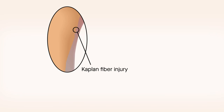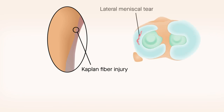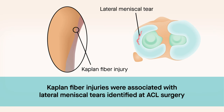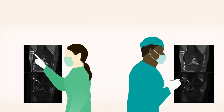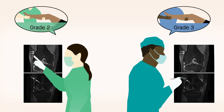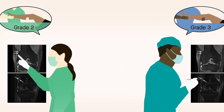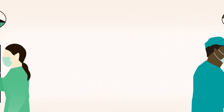However, there was an association between Kaplan fiber injury and lateral meniscal tears identified at the time of ACL reconstruction surgery. The MRI analyses and assessments of pivot shift are subject to some variation, as they were conducted by different clinicians.